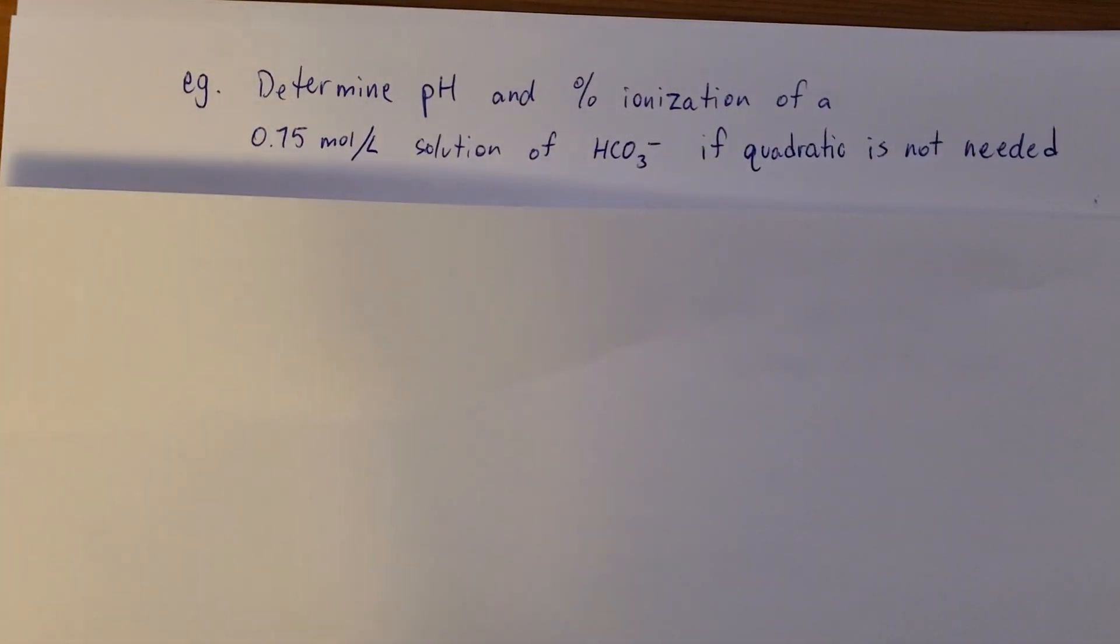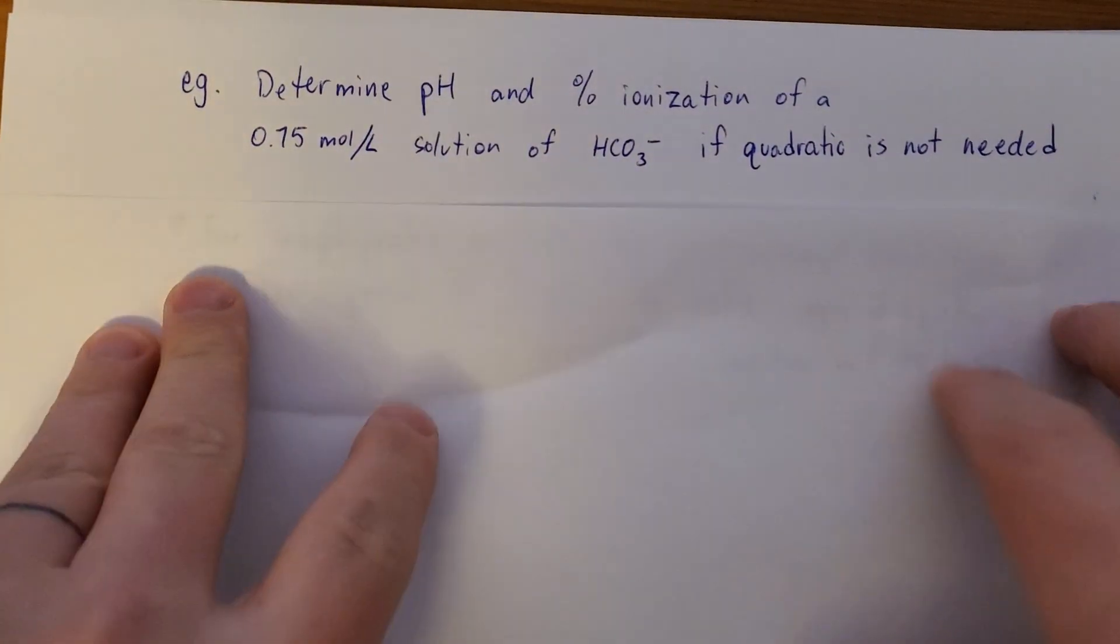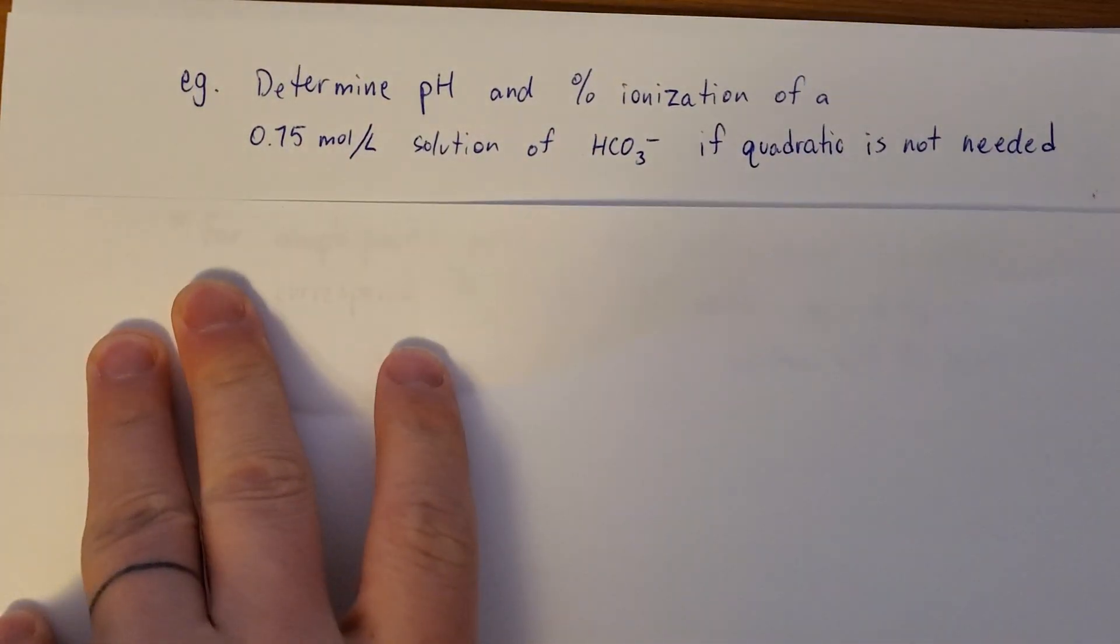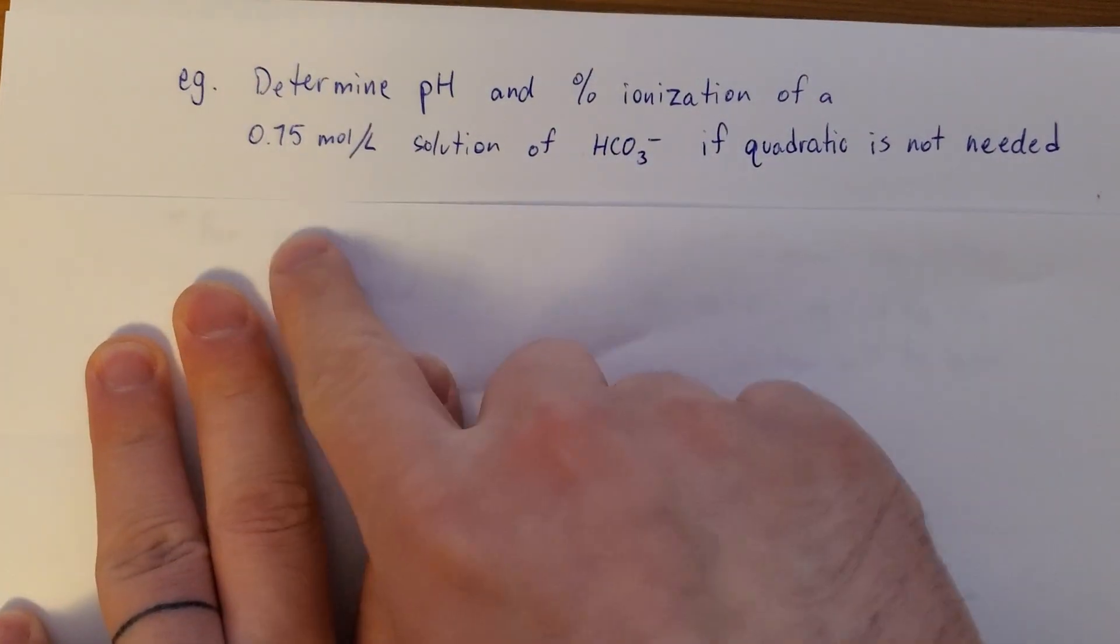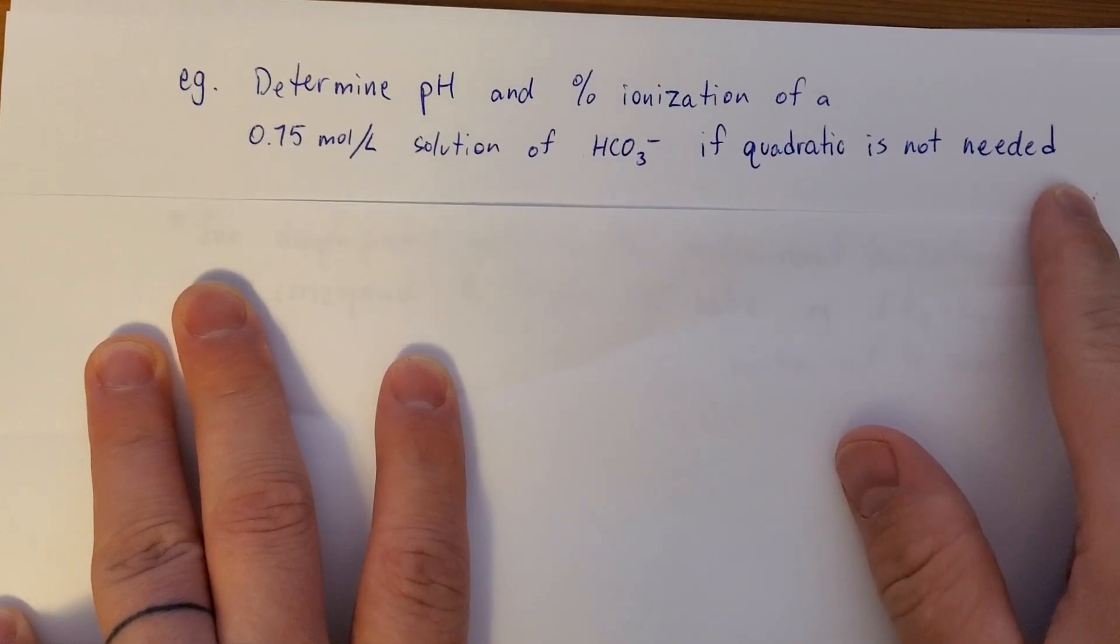All right, this example is going to tie everything together. There's going to be a lot of moving parts. Let's do it. So I'm going to find the pH and percent ionization of this solution, hydrogen carbonate, if the quadratic isn't needed.